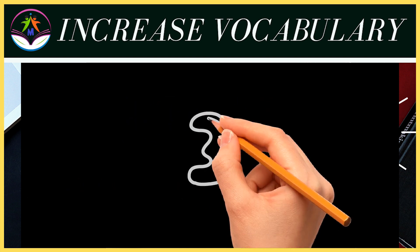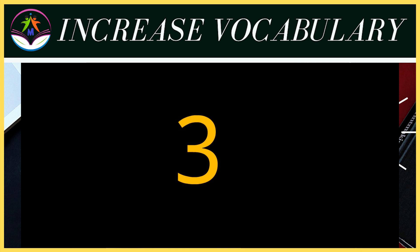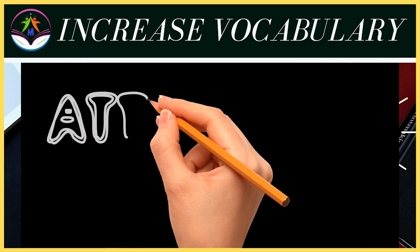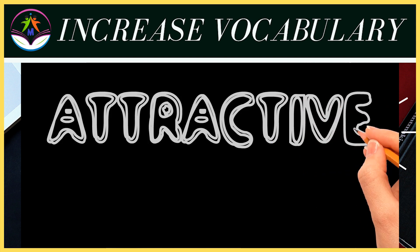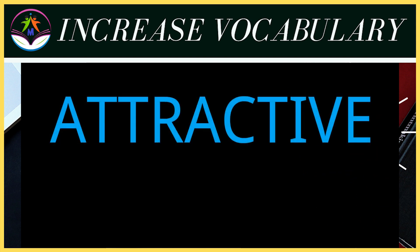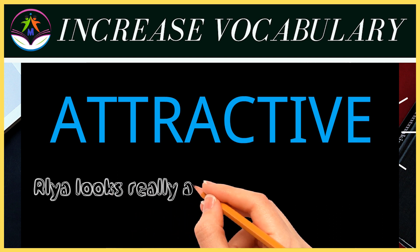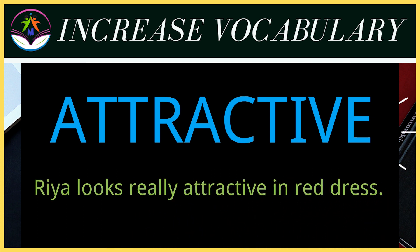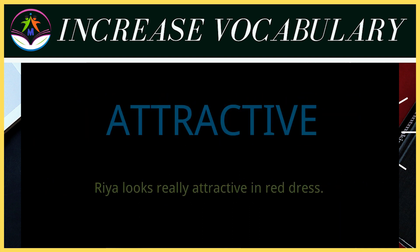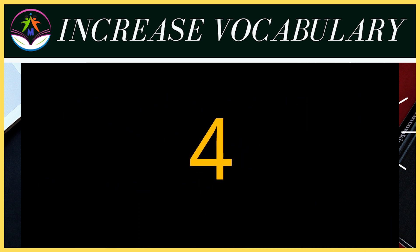Third word is 'attractive', spelled A-T-T-R-A-C-T-I-V-E. The meaning of attractive is akarshak. The sentence: Riya looks really attractive in a red dress. Riya lal rang ki dress mein bahut akarshak lagti hai.